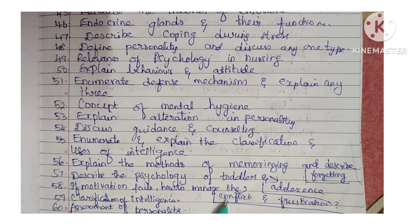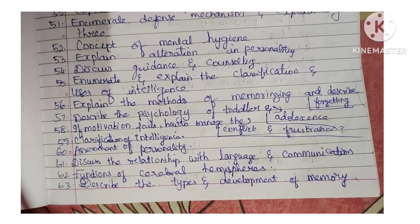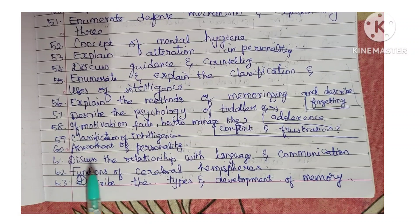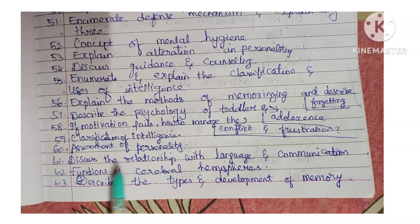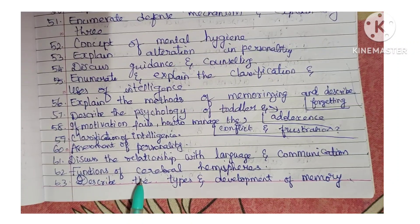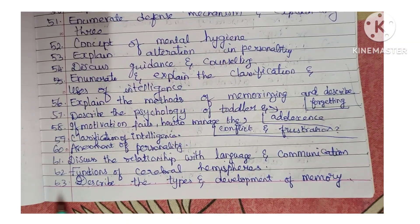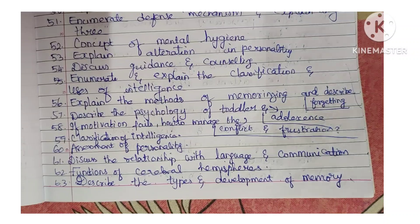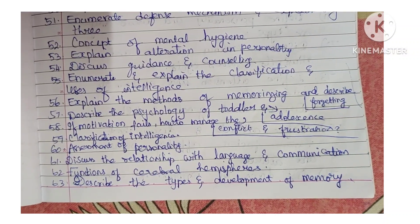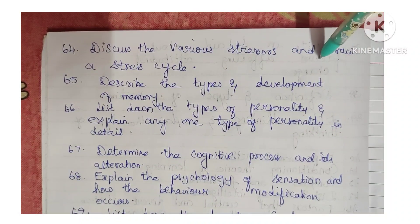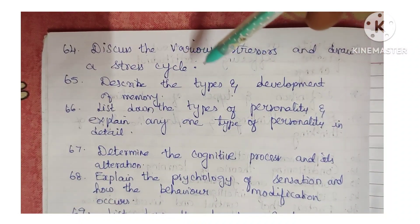Next: motivation phase — how to manage conflict and frustration? Next: classification of intelligence. Next: assessment of personality. Next: discuss the relationship between language and communication. Next: functions of cerebral hemispheres. Next: describe the types and development of memory. Next: discuss the various stressors and draw a stress cycle.